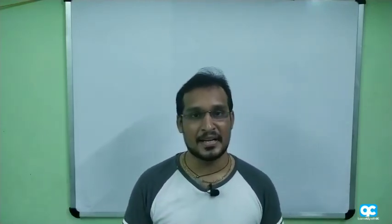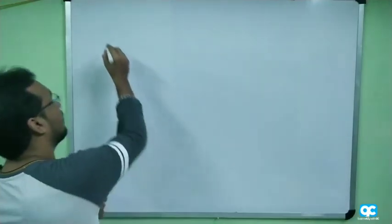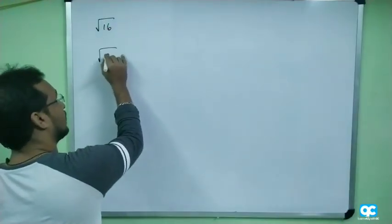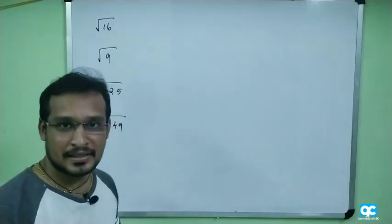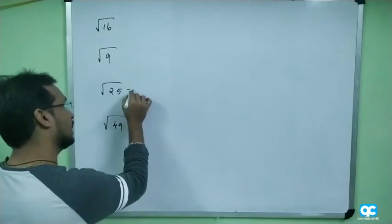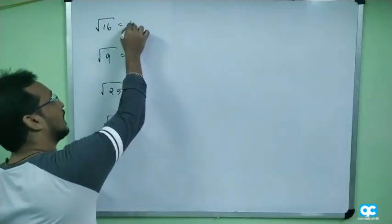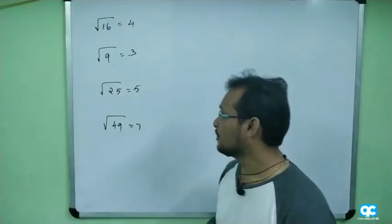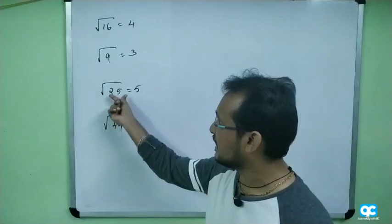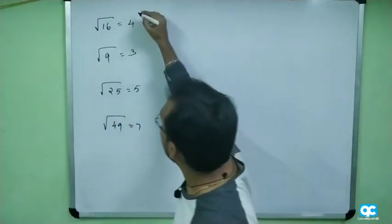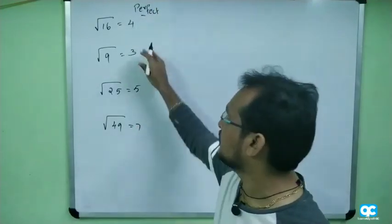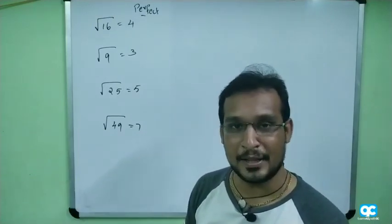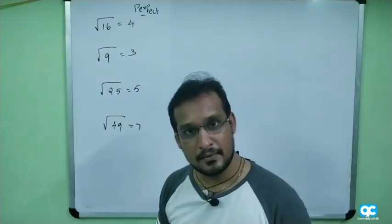If you want to calculate a square root, I'm going to show you. For example, root 16, root 9, root 25, root 49. If you want to find these values, you can easily say: it's 4, it's 3, it's 5, it's 7. These are perfect squares, so you can calculate them easily.